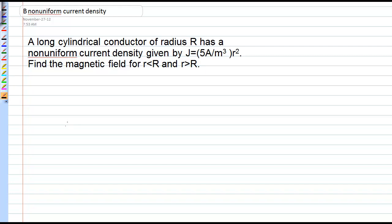In this problem we have a long cylindrical conductor, but now the current flowing through the conductor is not uniformly distributed across its cross-section.